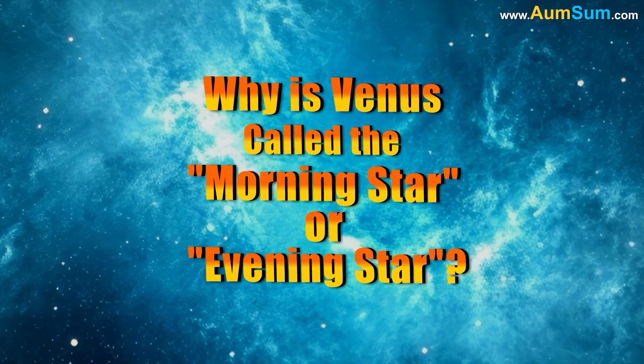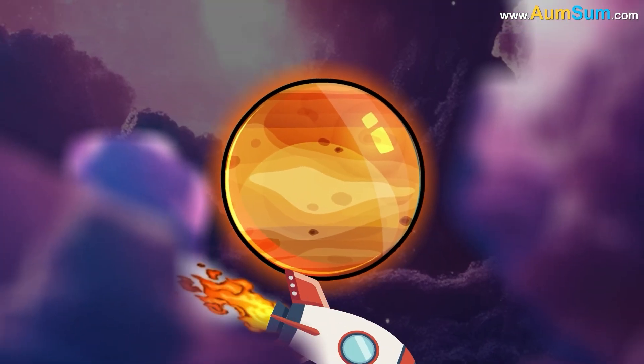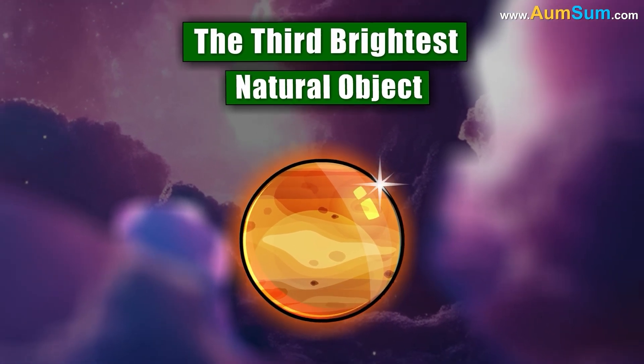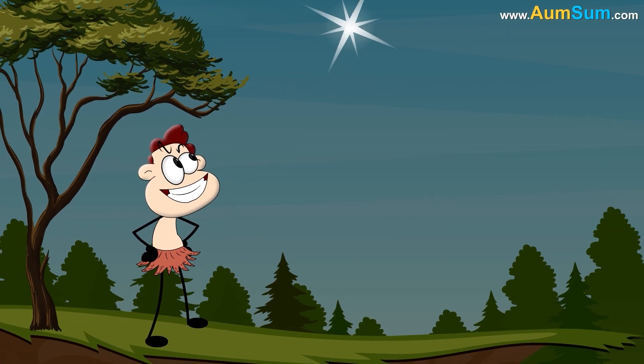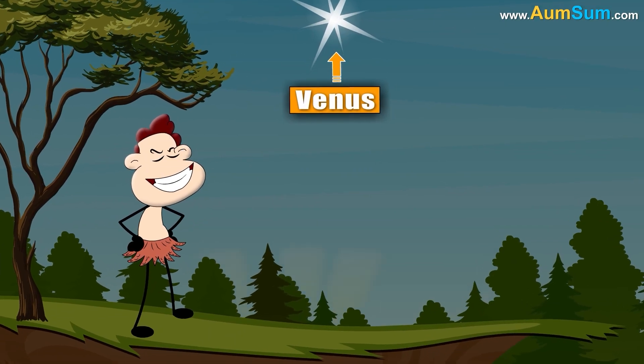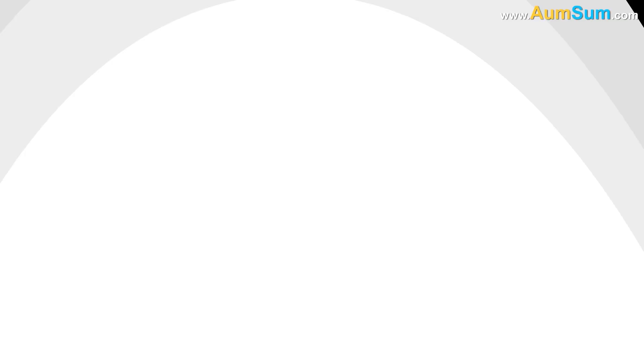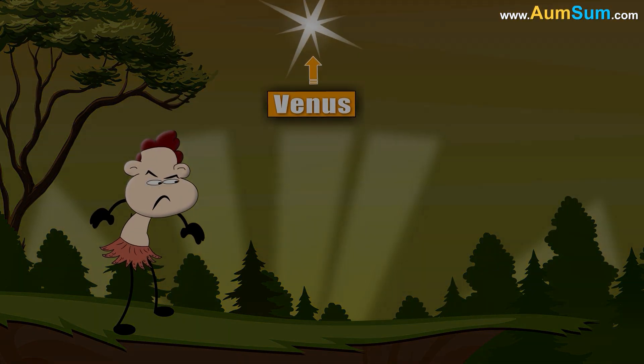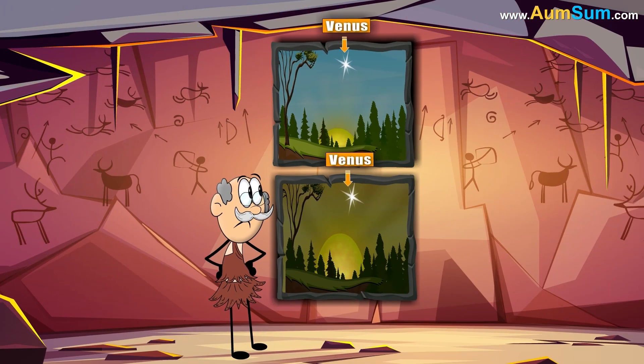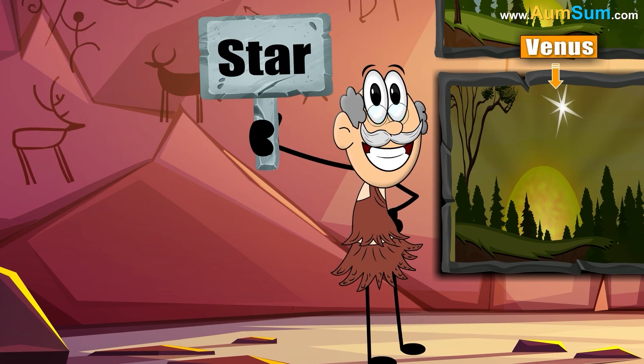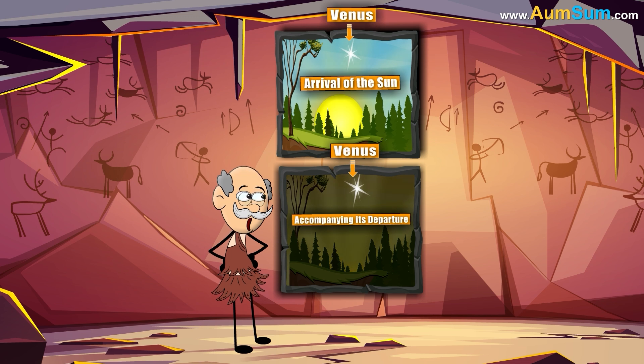Why is Venus called the morning star or evening star? When seen from Earth, Venus is the third brightest natural object in the sky after the Sun and the Moon. Ancient civilizations noticed that Venus was a regular feature either just before dawn or just after dusk. Because of its striking visibility during these times, they associated it with the idea of a star heralding the arrival of the Sun or accompanying its departure.